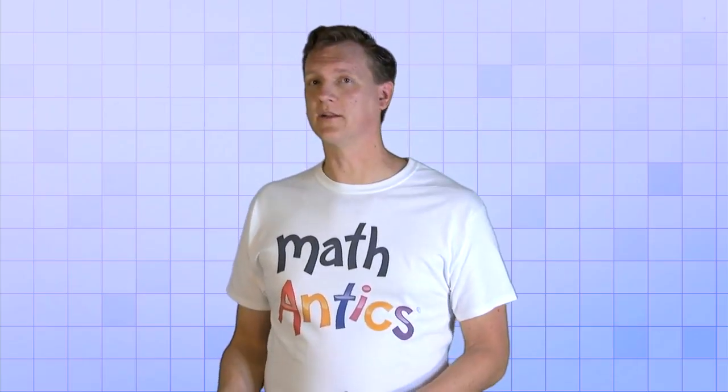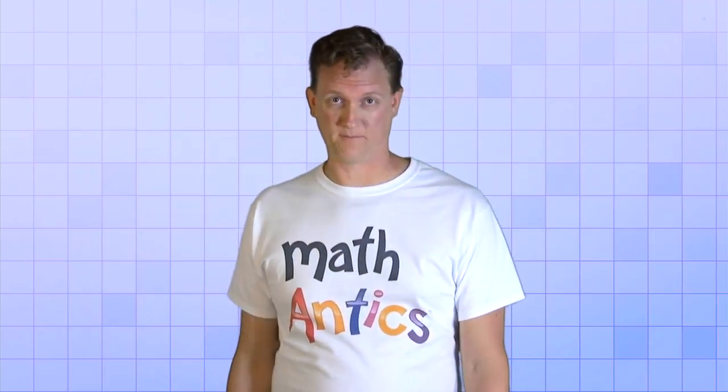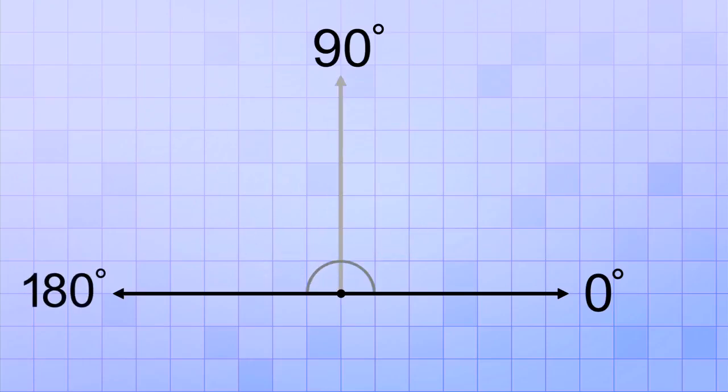Now before we go on, let's quickly review the important angles and regions that we've looked at so far. Our angle measurement is 0 degrees when the rays point in exactly the same direction. It's 90 degrees when they're perpendicular and form a right angle. And it's 180 degrees when they point in opposite directions and form a straight angle.